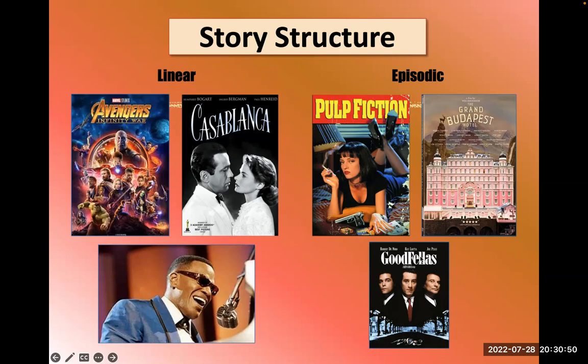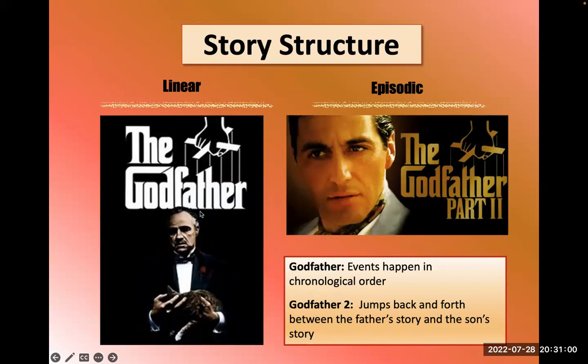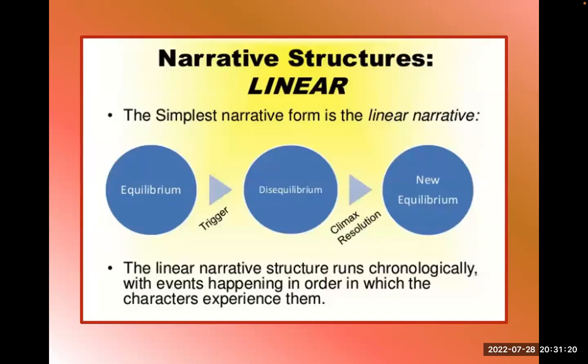More episodic films jump around in time, show different characters, and play with the structure. The Godfather — the first film — is linear: beginning, middle, and end. But The Godfather Part II follows two separate stories: the father's backstory and what happens to Michael after his father dies. They cut back and forth between the two — that's a classic episodic structure.